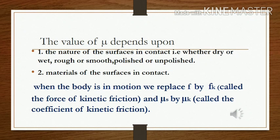Greater smoothness means less friction; greater polishedness or wetness means lesser friction, and vice versa for rough or dry surfaces. The second parameter is the material of the surfaces in contact. For example, an urban road that is tarmacked has a smooth material surface, while a rural earthen road is made of soil. We observe less friction on the tarmacked road than on the earthen road. So the coefficient of friction also depends upon the material of the surfaces in contact.